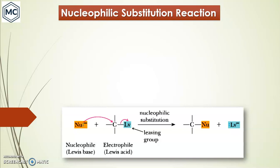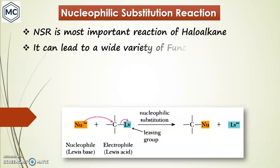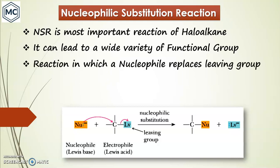Here is a simple scheme of nucleophilic substitution reaction. Nucleophilic substitution is the most important reaction of halogen compounds. Using this simple method you can make a wide variety of functional groups out of halogens. Nucleophilic substitution is a reaction in which a nucleophile replaces a leaving group.